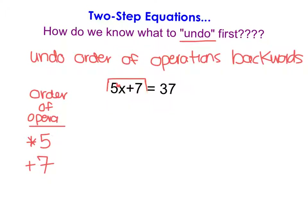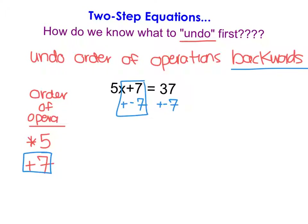I'm going to undo these operations in reverse, because when we're solving equations we are undoing the order of operations backwards. So I'm going to start by undoing that plus 7 — the way to undo a positive 7 is to subtract 7, or add a negative 7, to each side of the equation. Those zero out, and I'm left with 5x = 37 + (−7) = 30.